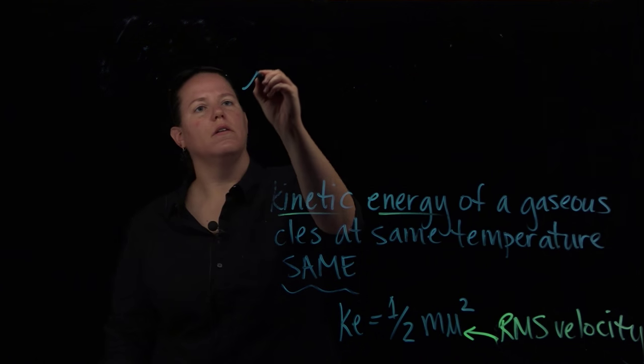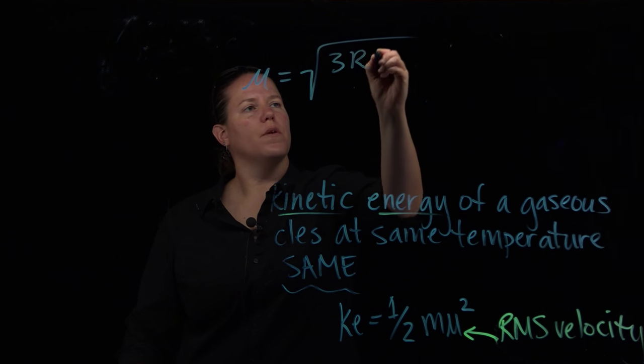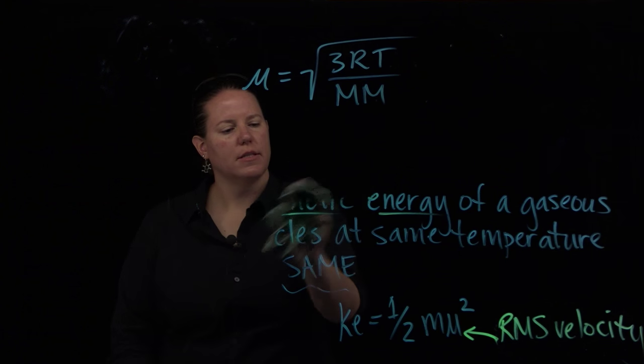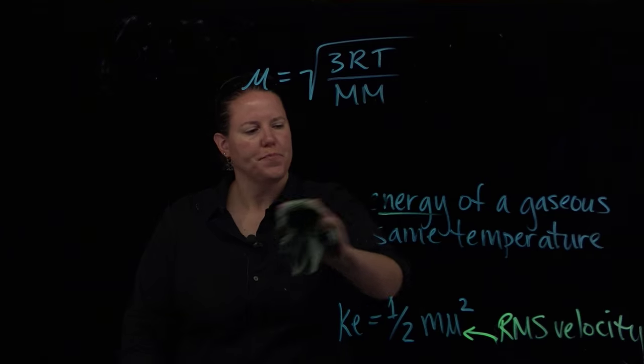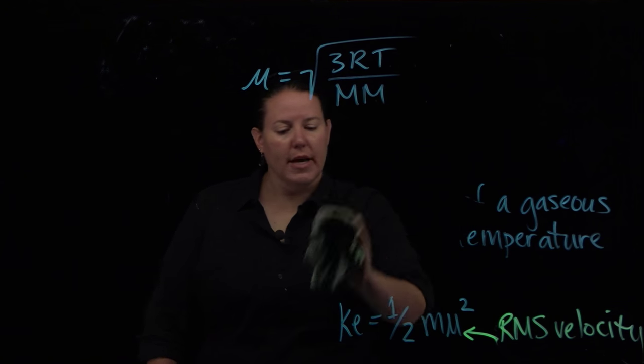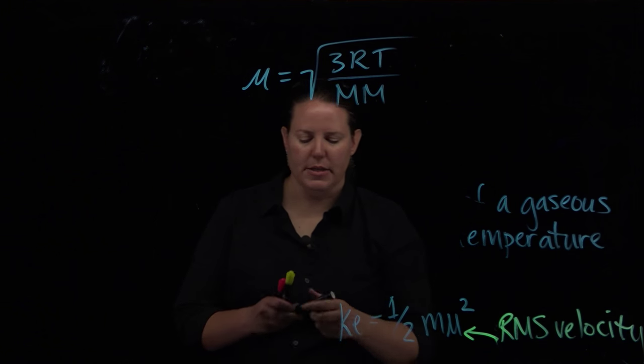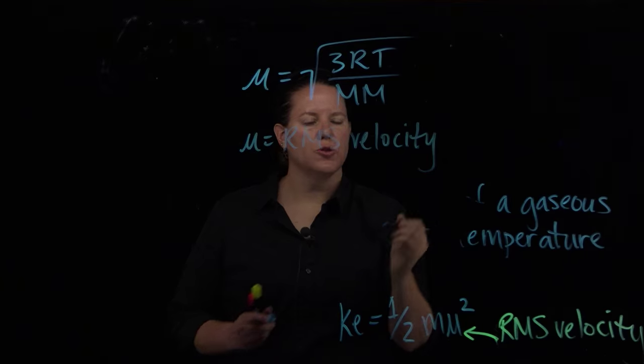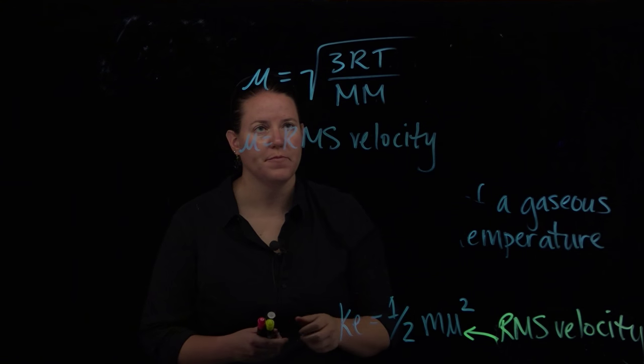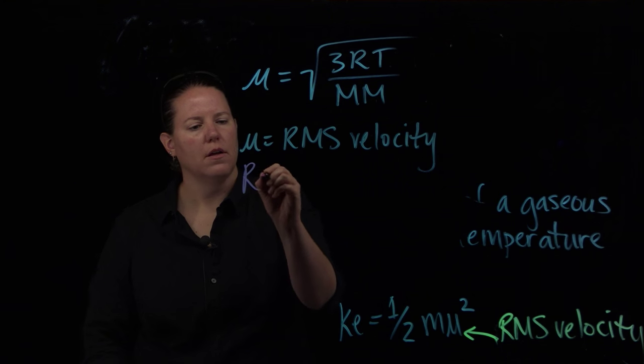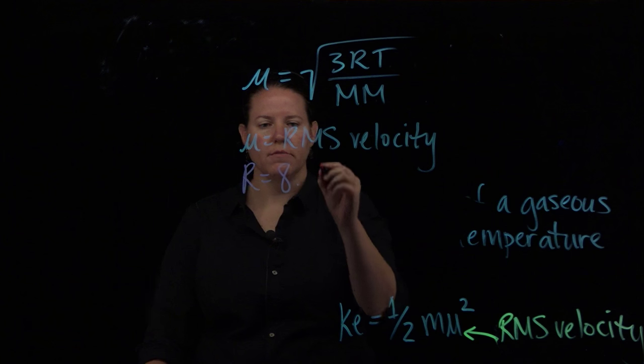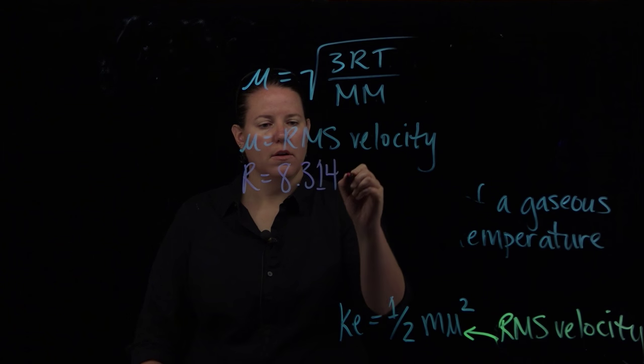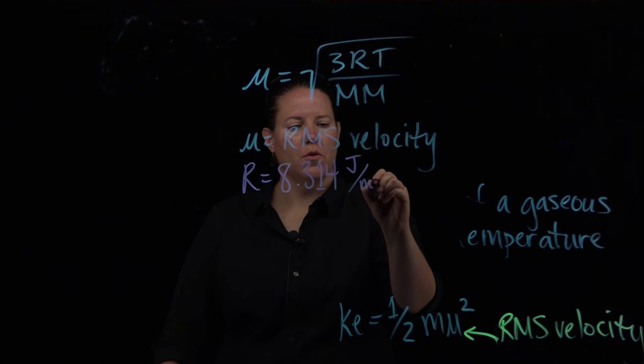The root mean square velocity equation is mu equals the square root of 3RT over the molar mass. What's interesting about this is that we know that mu is the root mean square velocity. We know that R is the ideal gas constant, but it's a different ideal gas constant than what we've dealt with in the past.